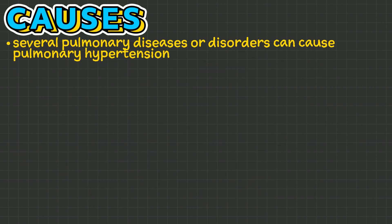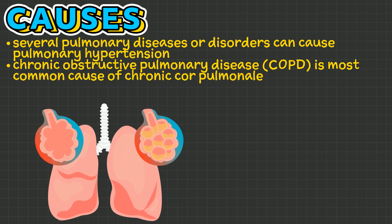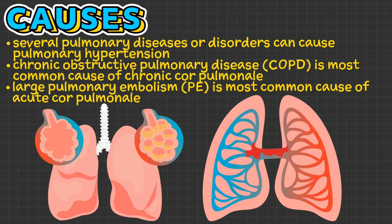There are several pulmonary diseases or disorders that can cause pulmonary hypertension. However, chronic obstructive pulmonary disease is the most common cause of chronic cor pulmonale, while a large pulmonary embolism is the most common cause of acute cor pulmonale. A link to learn more about pulmonary hypertension is provided on screen or in the description below.